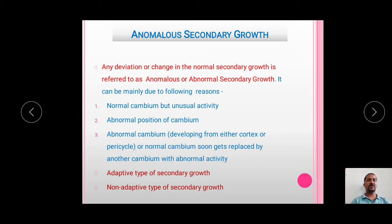The Anomalous Secondary Growth can further be classified into two types based on whether it has any beneficial effect on adaptation: the adaptive type of secondary growth, and the non-adaptive type of secondary growth.